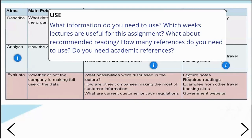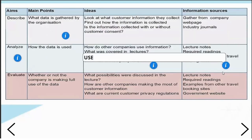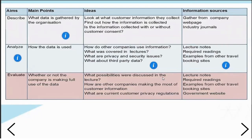Another thing to think about is whether there is any particular reading or sources that would be very useful for your assignment. How many references do you need? The assignment will often specify — for example, you must use five different sources. Do any need to be academic or scholarly references, like academic journals or textbooks? When doing the descriptive section, you might need information from the company webpage and some industry journals.